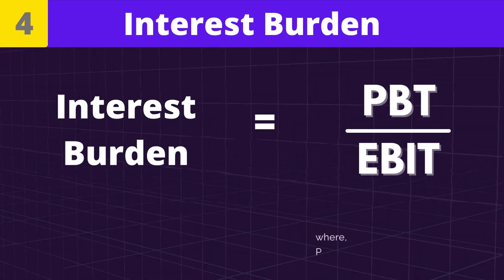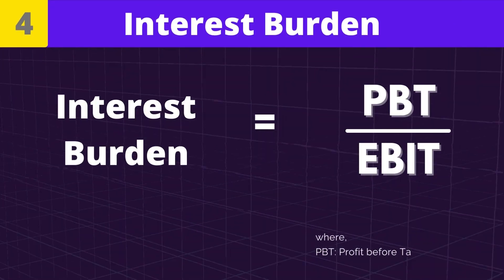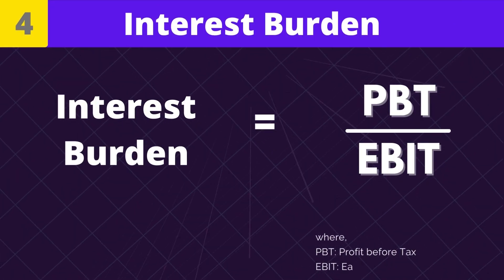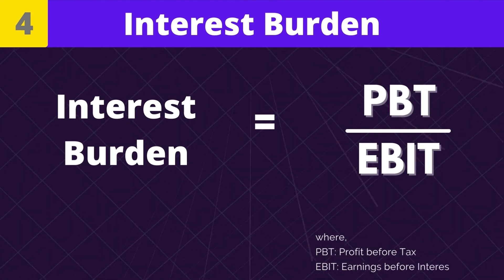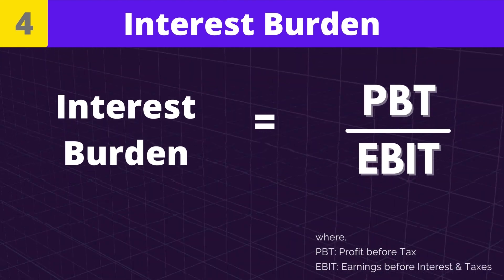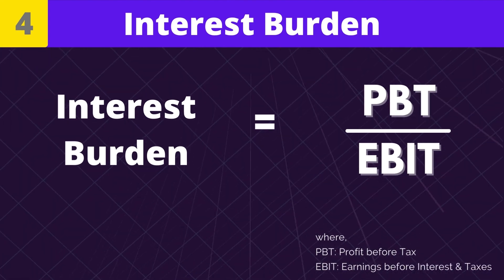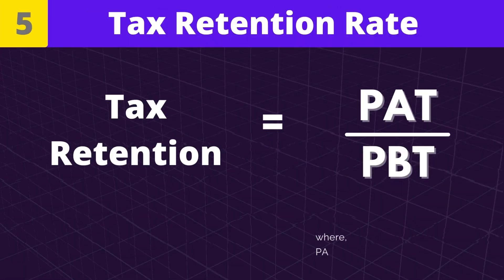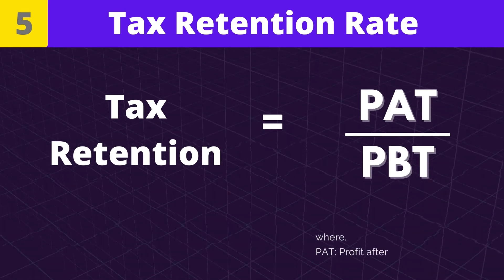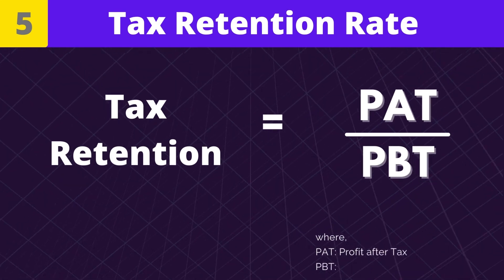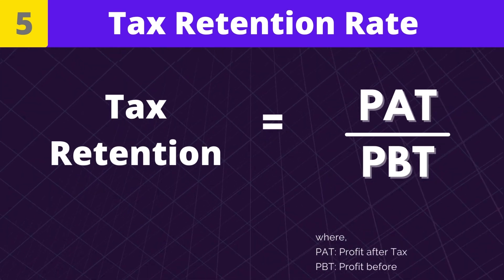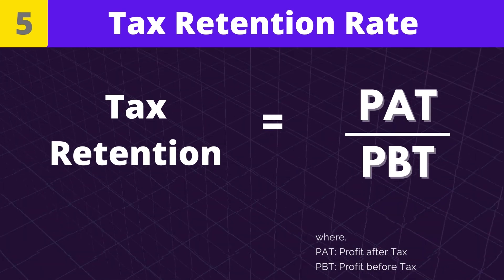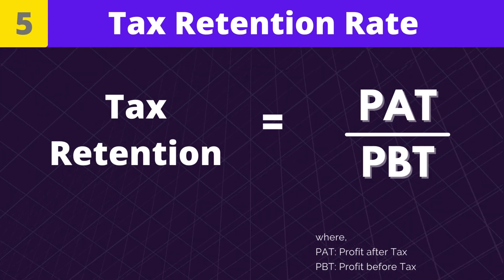Number 4: Interest Burden. Interest Burden is equal to profit before tax divided by EBIT. Number 5: Tax Retention Rate. Tax retention is equal to profit after tax divided by profit before tax.